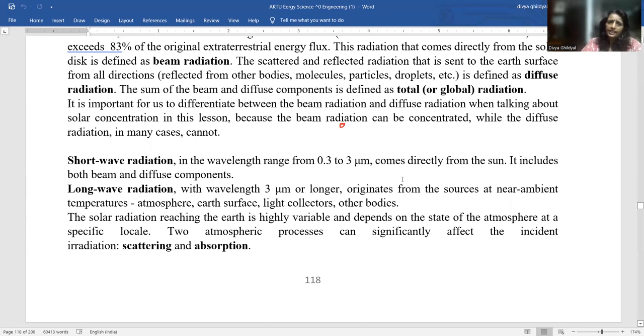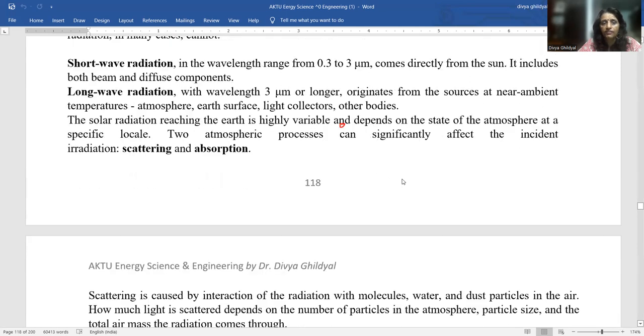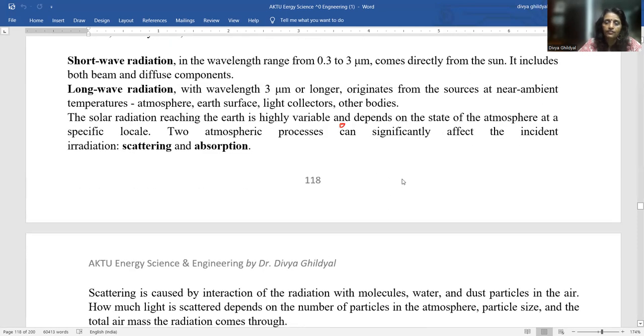You can say that the diffused shortwave radiation in which the wavelength ranges from 0.3 to 3 micrometer is coming directly from the sun. Long wave radiations with wavelength greater than 3 micrometer or longer originates from sources at near ambient temperatures. The atmospheric processes which significantly affect the diffused radiations are scattering and absorption.